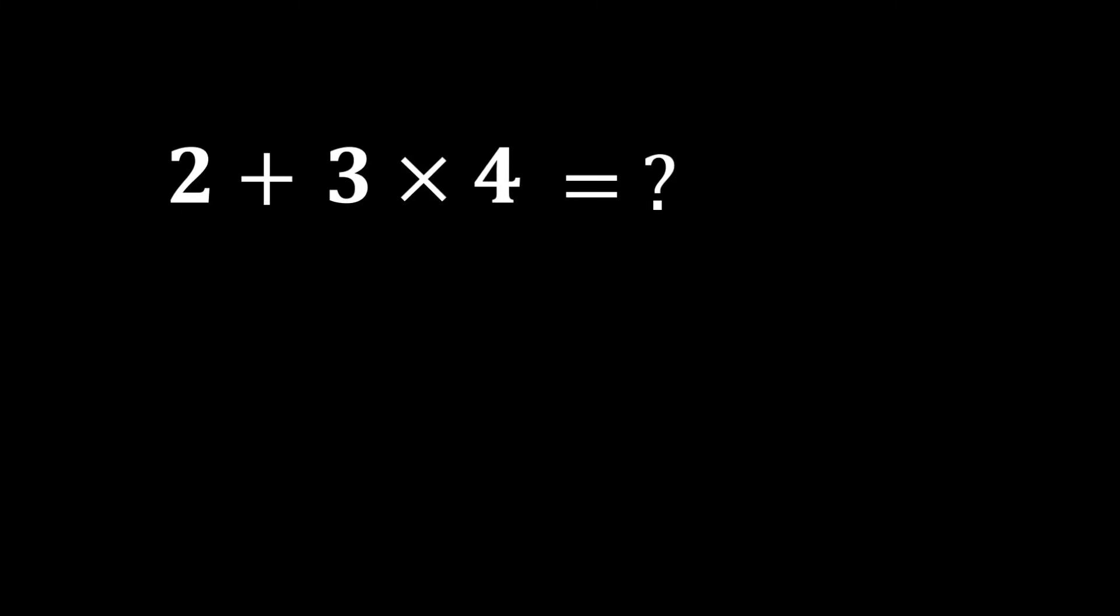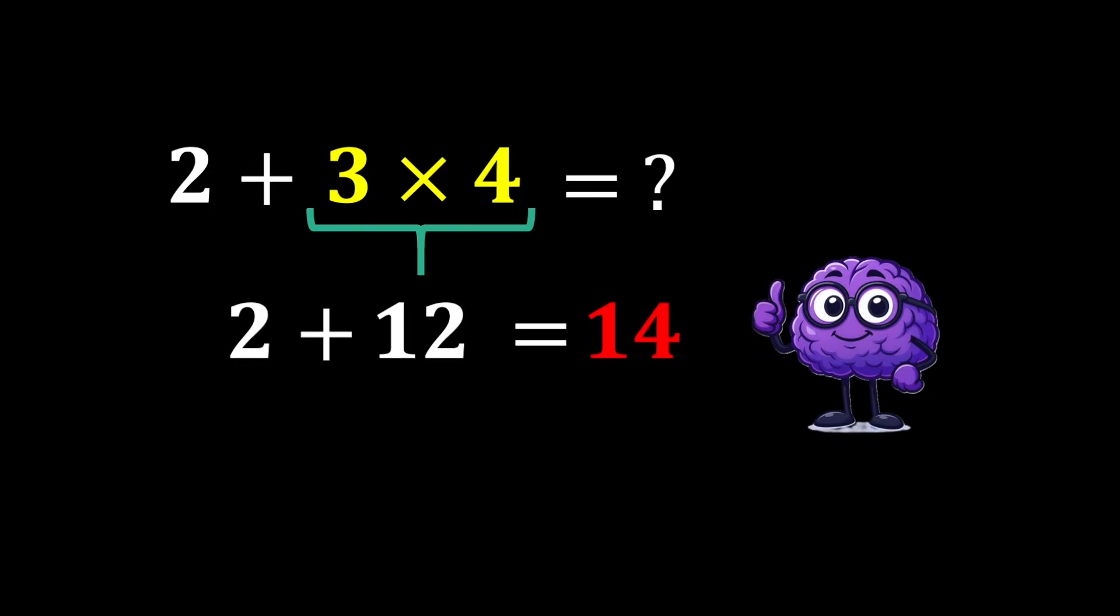2 plus 3 times 4. According to PEMDAS, multiplication has a higher priority than addition, so we do the multiplication first. 3 times 4 becomes 12. And in the end we calculate 2 plus 12. Which becomes 14. So the correct answer is 14.